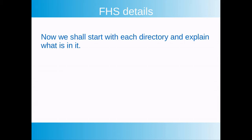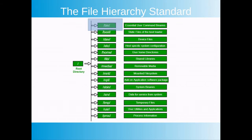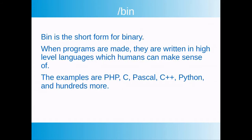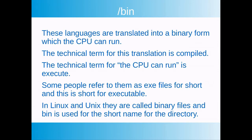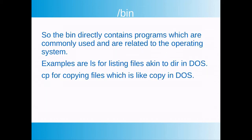Now we shall go through what is in each directory. The first one is the bin directory. Bin is short for binary. Programs are written in a high-level language that humans can understand — examples include PHP, C, Pascal, C++, Python, and hundreds more. These languages are compiled into a binary form which the CPU can execute. In some systems you will see the term executable files, or exe files. In Linux and Unix they are called binary files, and bin is used as the short name for the directory.